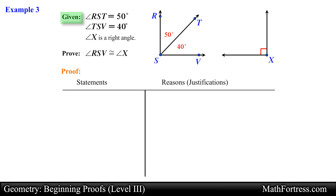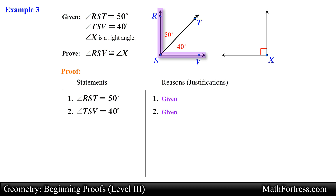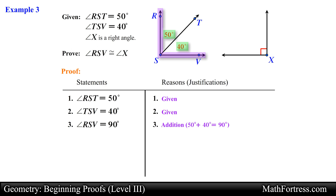Next we proceed with planning the argument. Let's start by writing down the given information. Angle RST measures 50 degrees — the reason is because it is given. Also, angle TSV measures 40 degrees and this is also given. Since we are trying to prove that angle RSV is congruent to angle X, we need to show that angle RSV has the same measure as angle X. Notice that angle RSV measures 90 degrees — if we take the measurement of angle RST and add it to the measurement of angle TSV we get 90 degrees. So for our reason we write 'addition' and write in parentheses (50 degrees + 40 degrees = 90 degrees) to show which angles were added together.